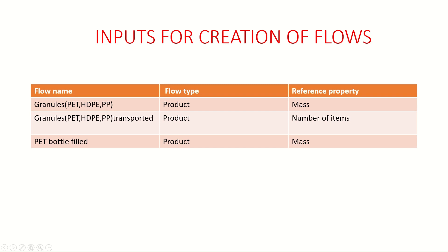The first flow name is granules PET, HDPE, PP. The flow type is product — meaning the granules are taken out as a product — and the reference property is mass. The next flow is granules PET, HDPE, PP transported, with flow type product and reference property as number of items. The last flow is PET bottle filled, again a product type with reference property as mass.